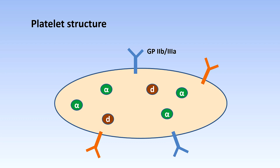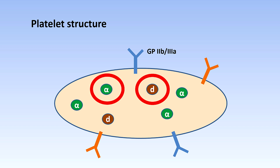The platelet contains alpha granules and dense granules. These are small vesicles which contain chemical mediators. When these are released from the platelet they can activate other platelets, drawing them in too to form the clot.